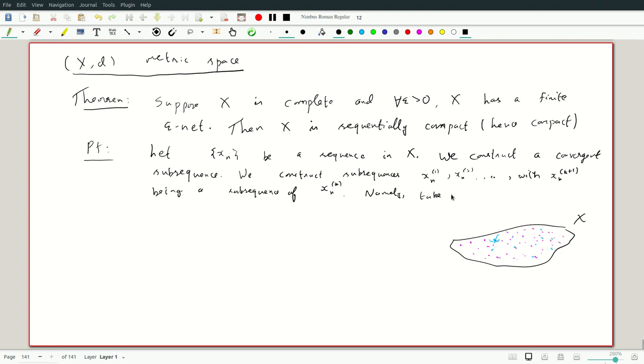Take epsilon equals half first and consider the epsilon net, e half. So, now, as e half is finite, consider the finite epsilon net. We are not requiring that every epsilon net is finite. Indeed, it is not, because you could just add all the points in epsilon. So, consider the finite epsilon net, e half. Rather, by hypothesis, there is a finite epsilon net, e half.